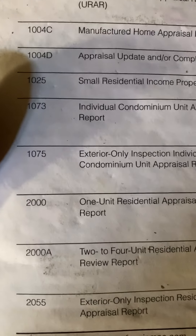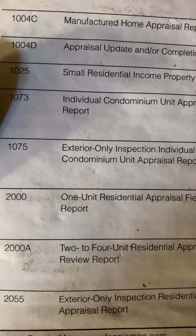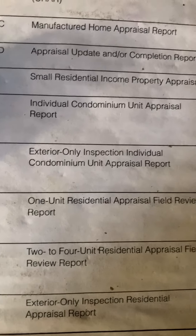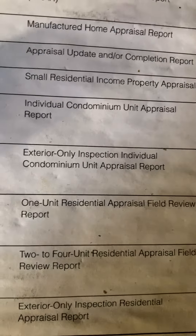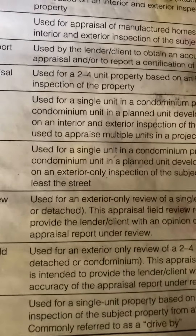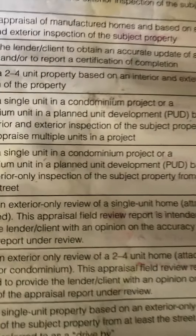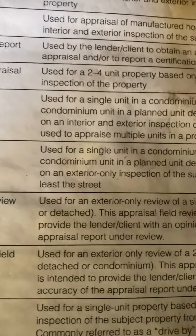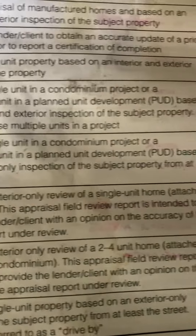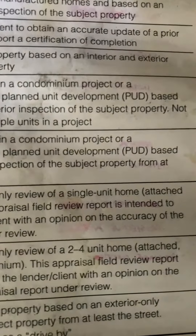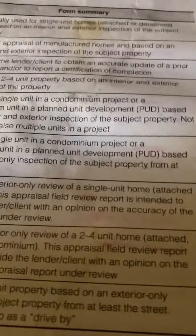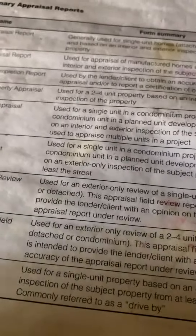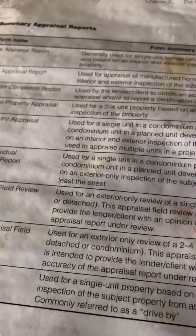Form 1075 is an Exterior Only Inspection Individual Condominium Unit Appraisal Report. It's used for a single unit in a condominium project or a condominium unit in a planned unit development (PUD), based on an exterior only inspection of the subject property from at least the street.